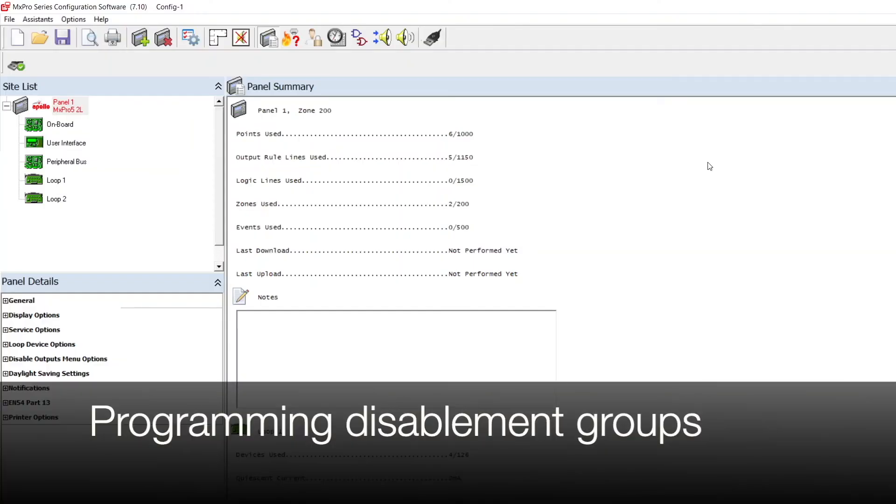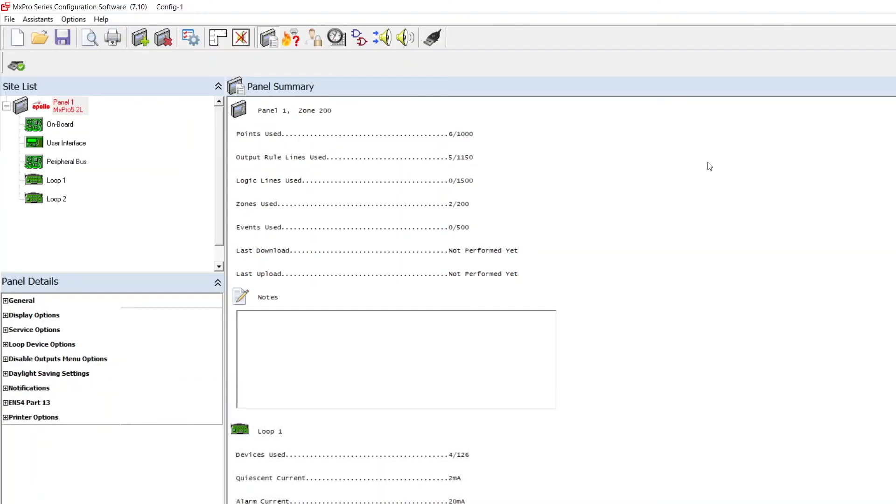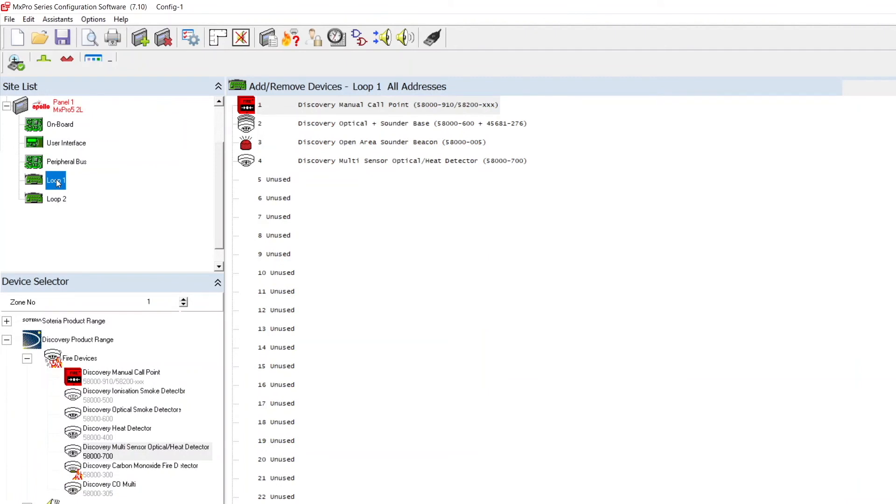To program disablement groups, the PC configuration software must be used. On the config software, select a loop from site list on the left hand side. This will bring up a list of all devices on the loop.